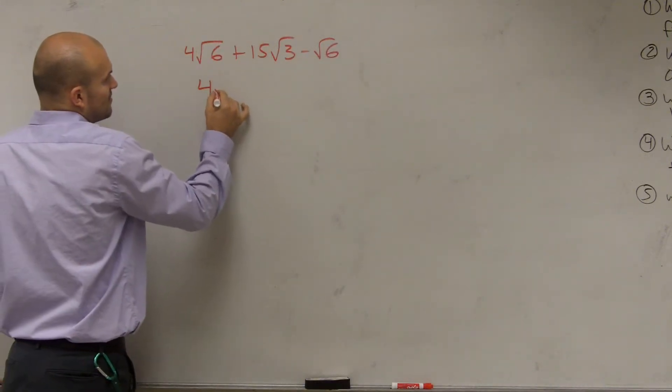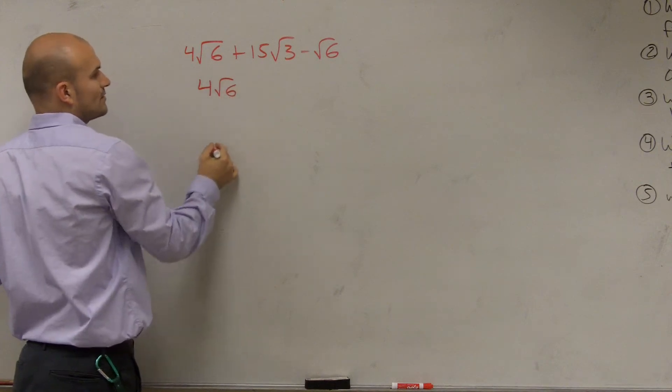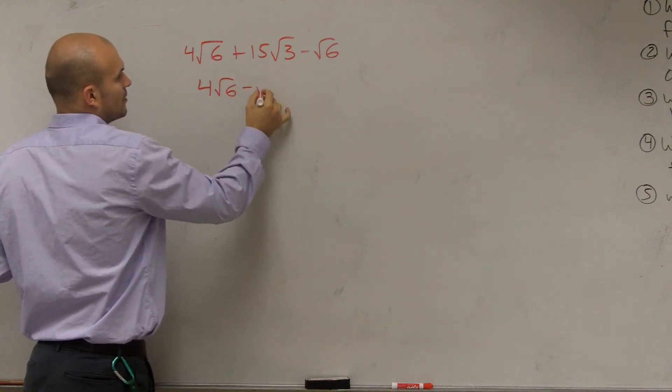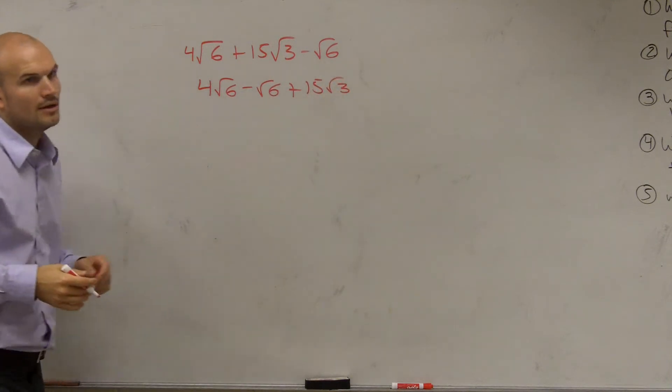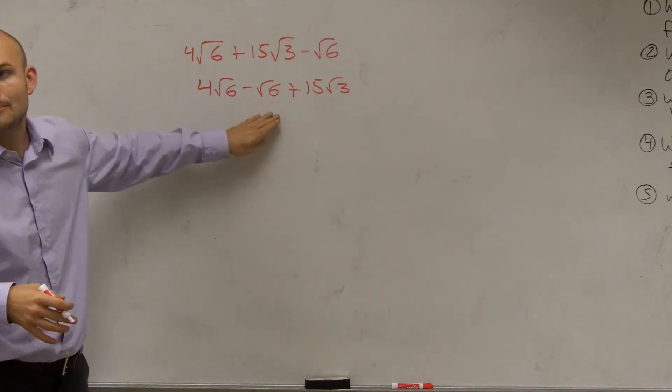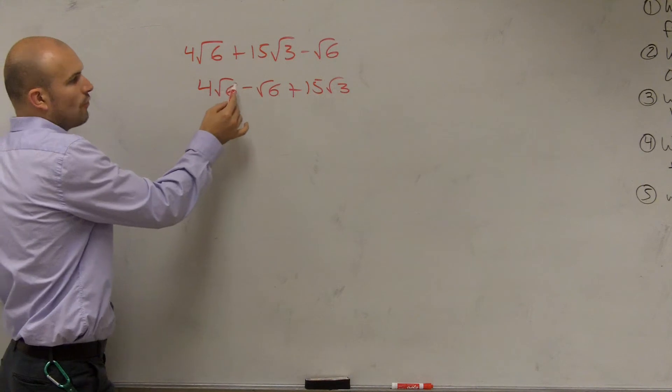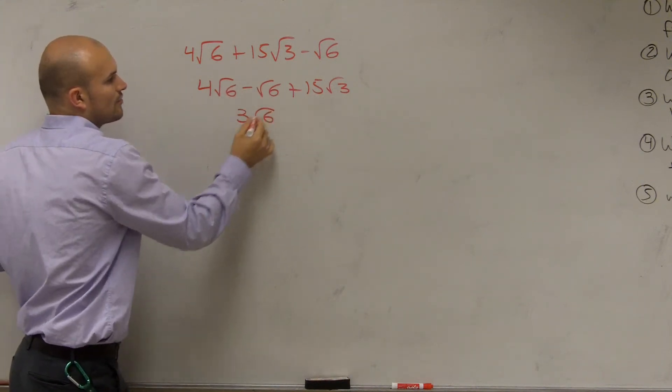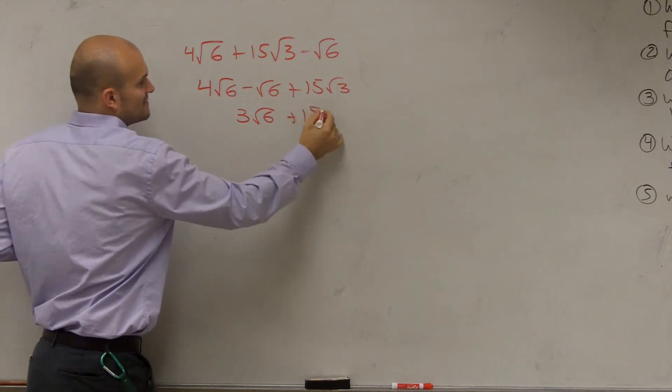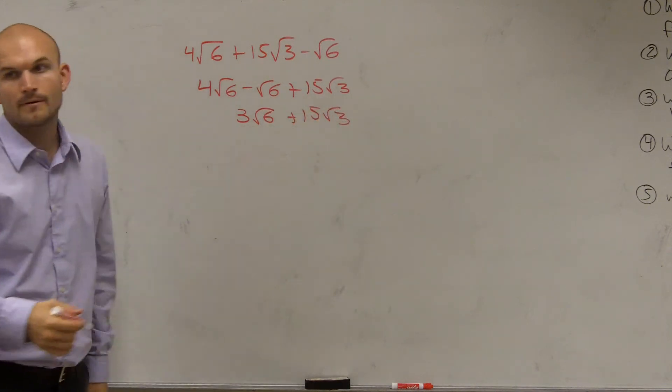What I mean is I can combine the 4 radical 6 minus radical 6 plus 15 radical 3. So I can combine these two. Now, 4 times radical 6 minus radical 6 is going to give me 3 radical 6 plus 15 radical 3.